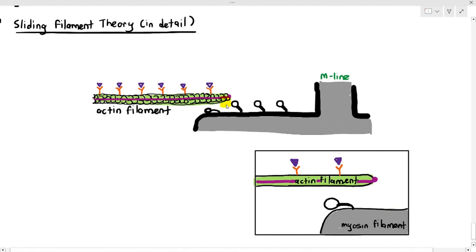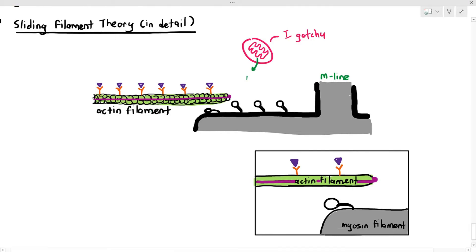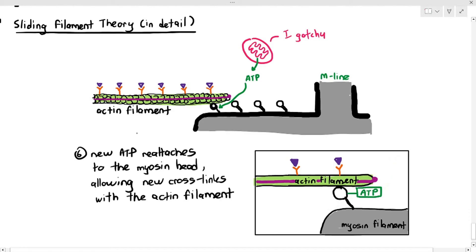The myosin head is no longer touching the actin filament, but it needs to reattach to continue pulling. The answer is simple: the many mitochondria in the muscle fiber generate new ATP. The ATP reattaches to the myosin head, causing it to stand up again and reattach to the actin filament to start the process anew. The process repeats over and over until maximum contraction is reached, or the muscle runs out of ATP. This is the sliding filament theory.